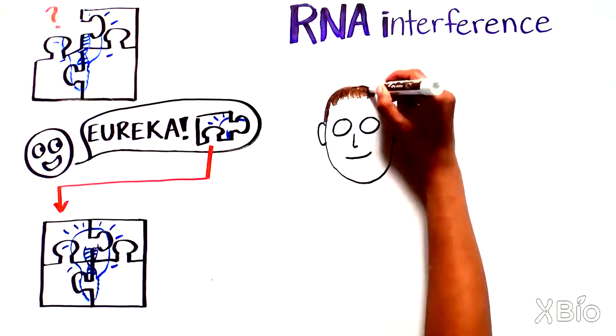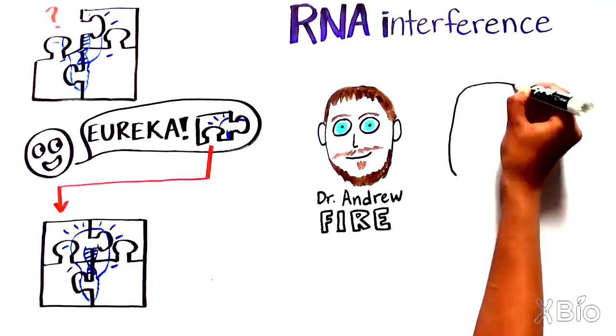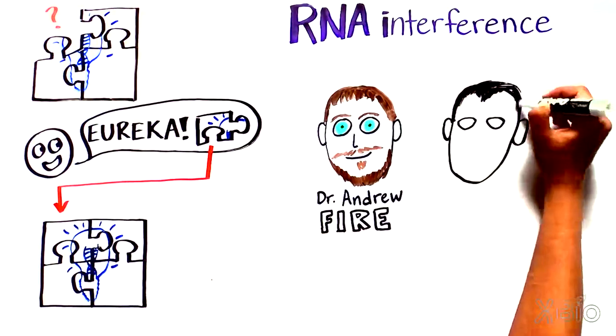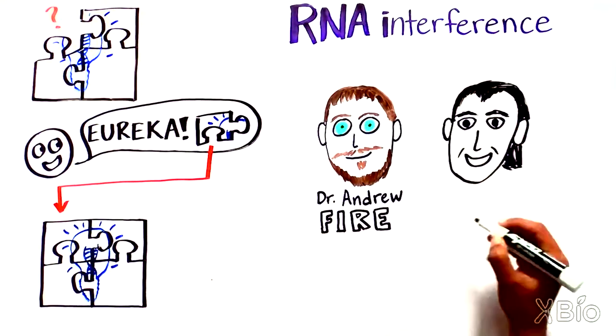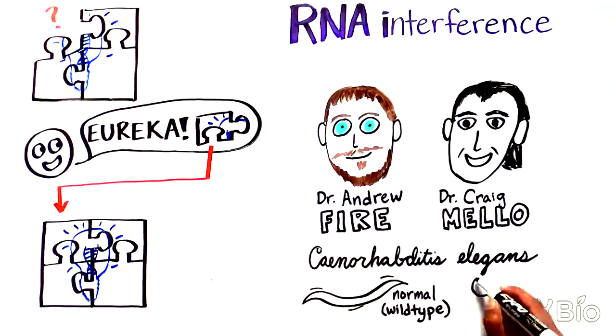Often, revolutionary discoveries come from scientists following an unusual observation during their studies. For doctors Andrew Fire and Craig Mello, that came when they saw a mutant strain of C. elegans, a type of worm commonly used as an animal model, display an unusual twitching behavior.